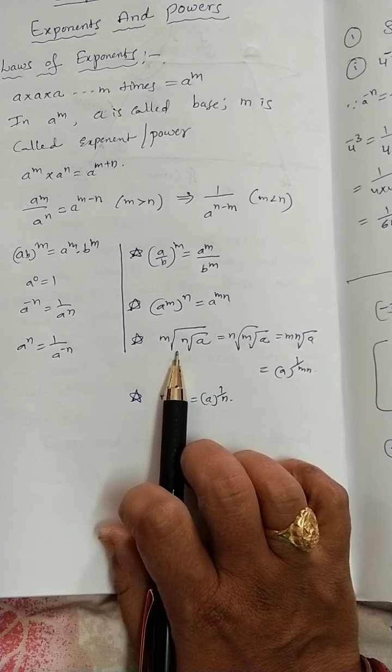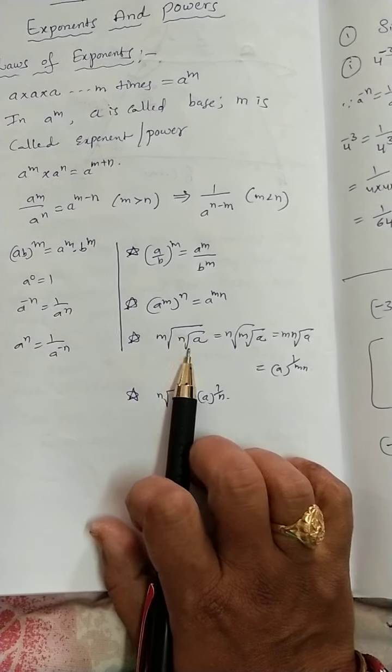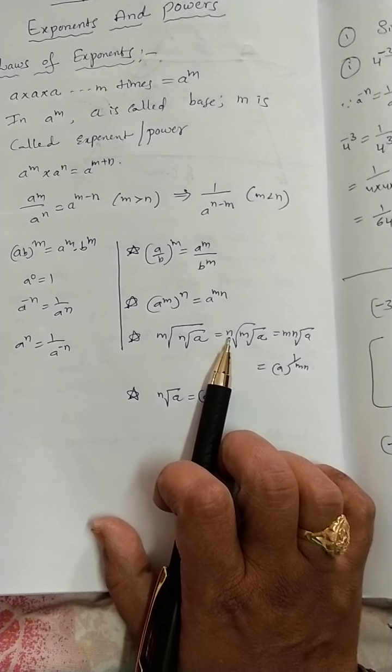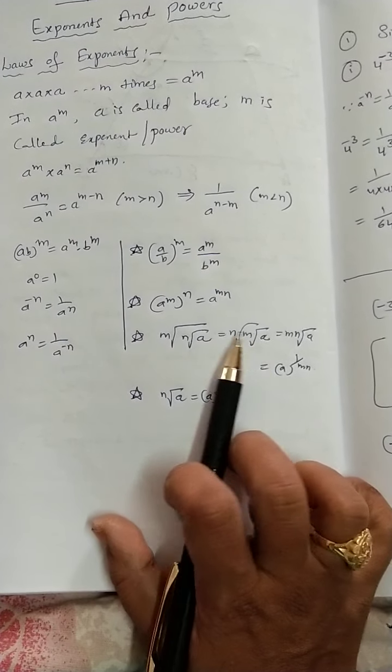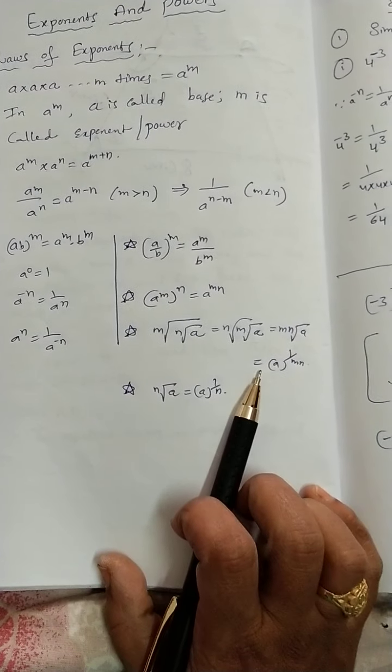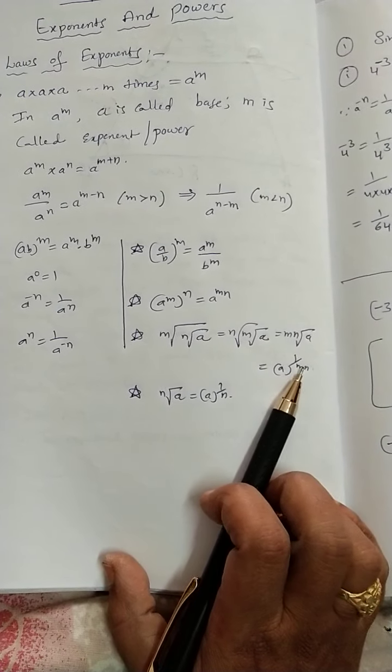Here, M square root of N square root of A is equal to N root M root A where MN root A is equal to A power 1 by MN.